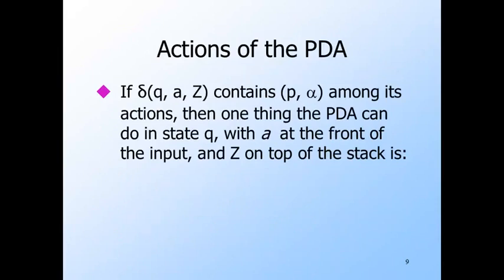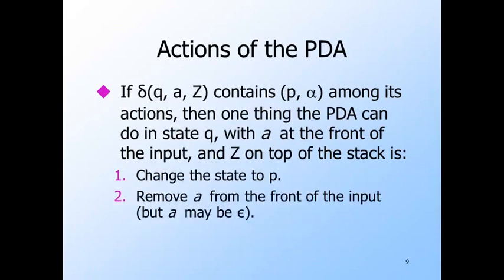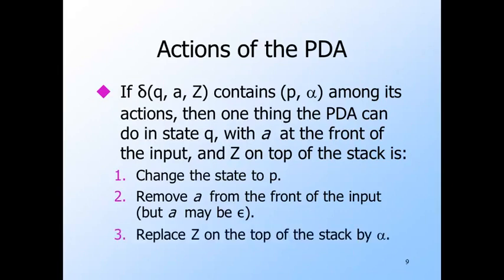To summarize: when delta of Q, A, and Z contains P alpha, then one choice of move for the PDA — when it is in state Q, sees A at the front of the remaining input, and has Z on top of stack — is to go to state P, remove A from the front of the input (if A is epsilon, the remaining input doesn't change), and replace Z by alpha on top of the stack. Note that although the PDA may have choices — several different P-alpha pairs — it has to pick one pair and do both things associated with that pair. It can't pick a next state from one pair and a stack string from another.